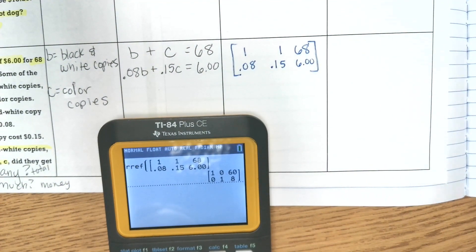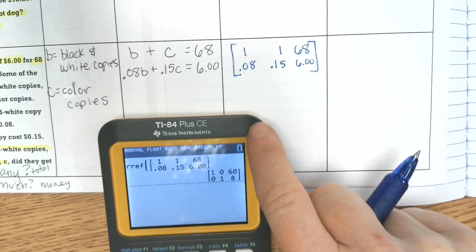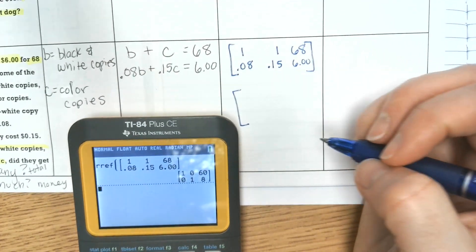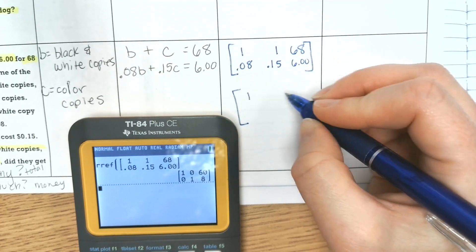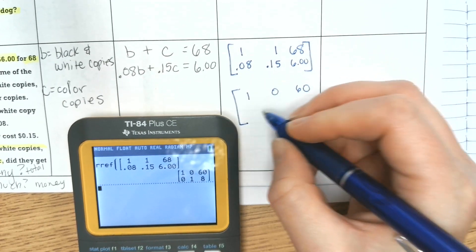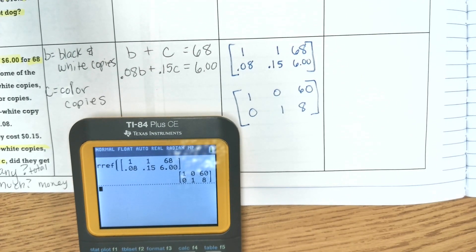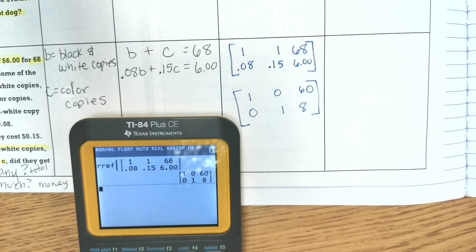And then write your output matrix. This is what I got. One, zero, sixty. Zero, one, eight. Is that what y'all got?